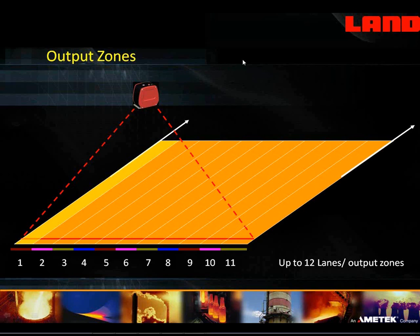The single sensor in this device, which is scanned across, has one calibration. So if you see a temperature at one side which is different from the other side, it really is different, because the same detector makes all those measurements in that image. In the case where you've got 11 lanes, this is like having 11 separate thermometers looking at 11 separate areas on the product, but all with exactly the same calibration. There's no differential calibration involved.